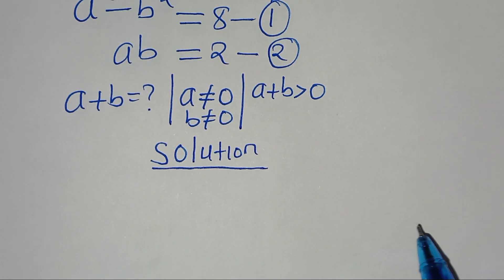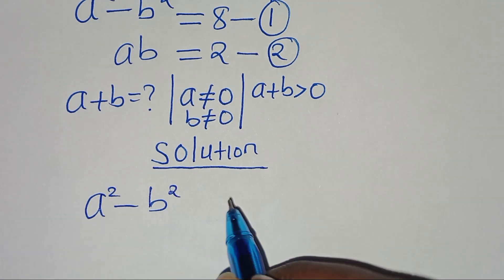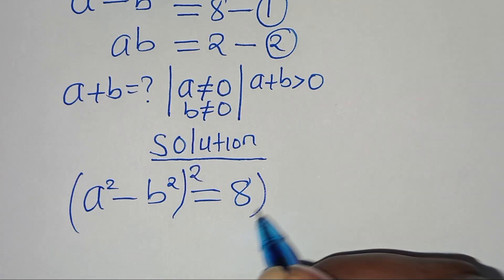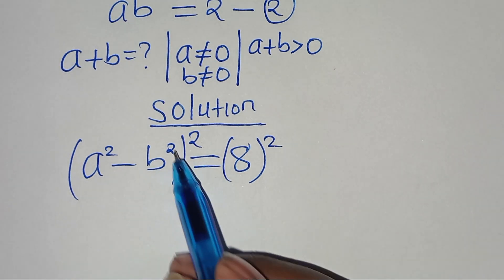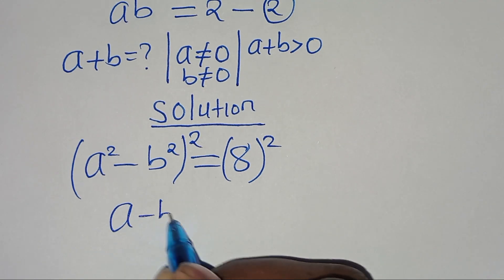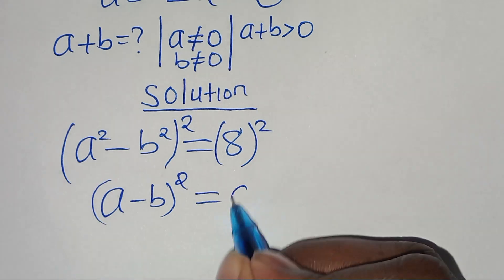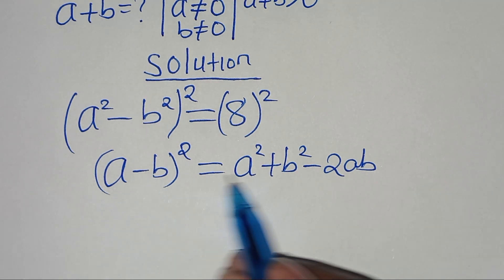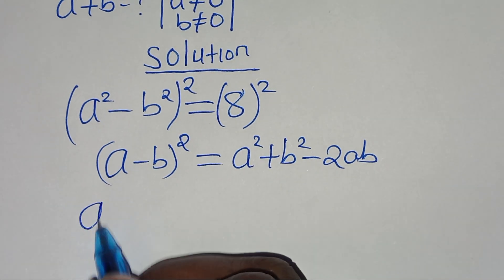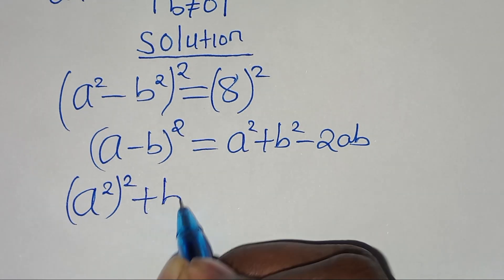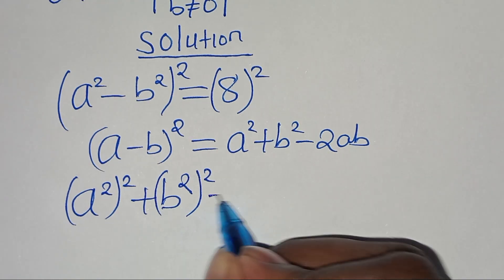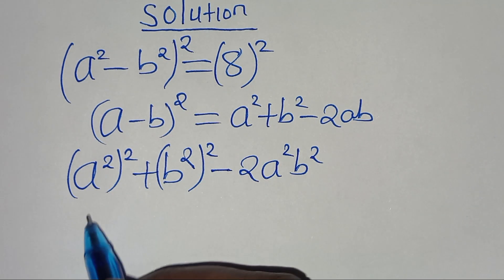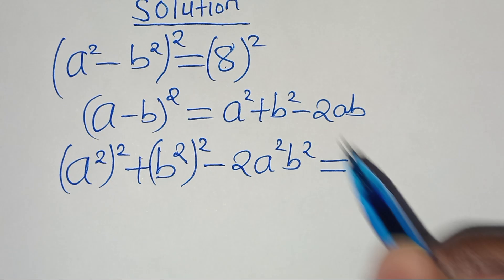From equation 1, which is a squared minus b squared equals 8, the first step is to square both sides. We find that (a squared minus b squared) squared is in the form of (a minus b) squared, which we can express as a squared plus b squared minus 2ab, applying this algebraic identity. This gives us a to the power of 4 plus b to the power of 4 minus 2a squared b squared, and this is equal to 8 squared, which is 64.